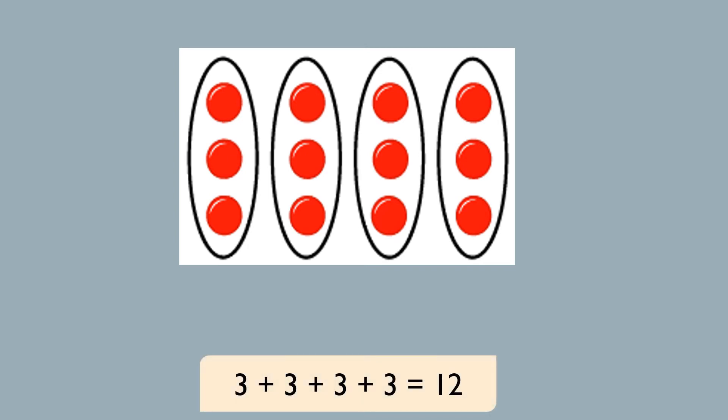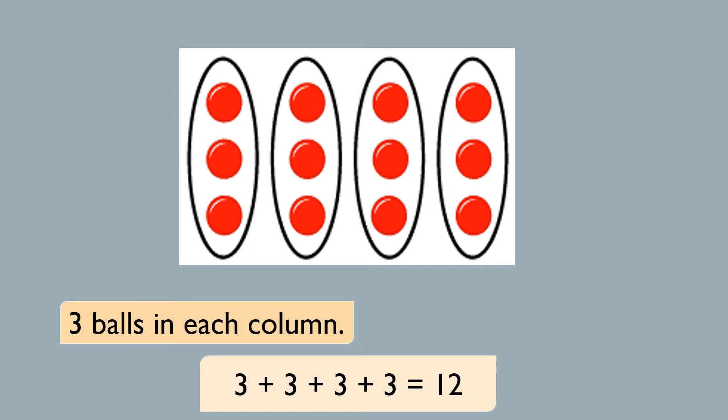These balls are grouped vertically and there are 3 balls in each column. You can add the number of objects by making vertical groups or horizontal — the answer will be the same because we have the same number of objects. Here we have 3 balls in each column and we have 4 columns, which means we will add the number 3 four times. So 3 plus 3 plus 3 plus 3 equals 12. It's the same as skip counting by 3s: 3, 6, 9, 12.